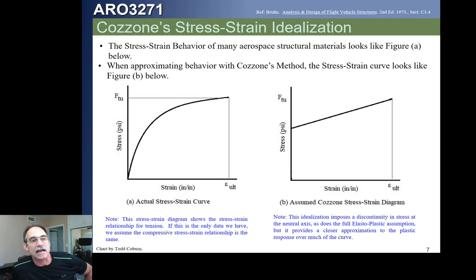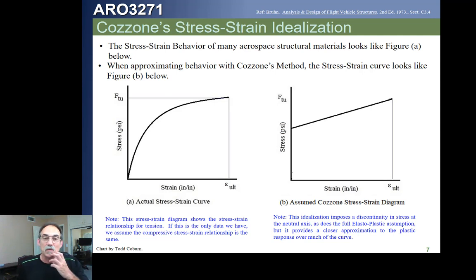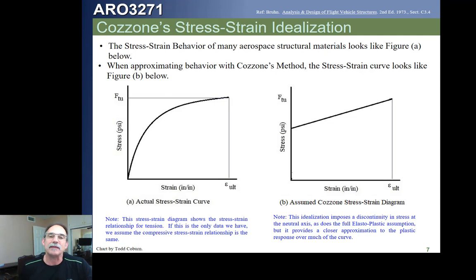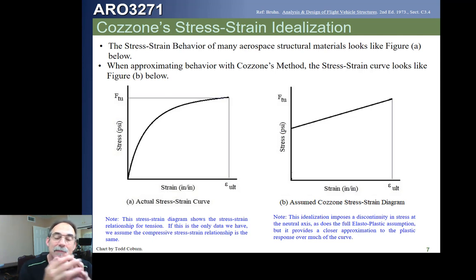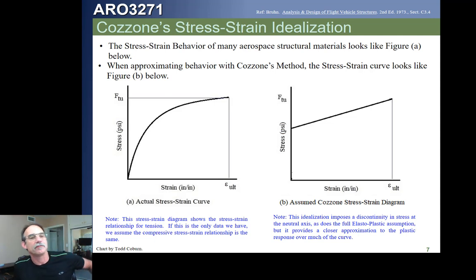He's going to have material which basically goes to the ultimate strain and has the same Ftu. But then he comes up with a fictitious value, Fo, which idealizes the shape of the trapezoid that gives you the same moment capability as the real stress-strain curve. Let's take a look at how that works.